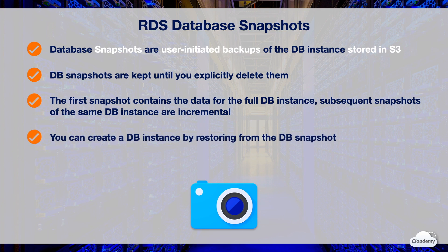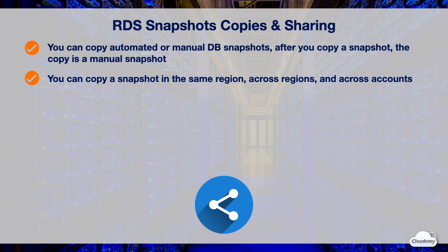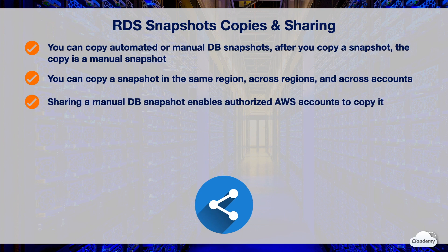You can create a DB instance by restoring from a DB snapshot. You cannot restore from a DB snapshot to an existing DB instance — a new DB instance is created when you restore. You can copy automated or manual DB snapshots, and after you copy a snapshot, the copy becomes a manual snapshot. You can copy a snapshot within the same AWS region, across regions, and across AWS accounts. You can also share a manual DB snapshot, whether encrypted or unencrypted, enabling authorized AWS accounts to copy the snapshot.